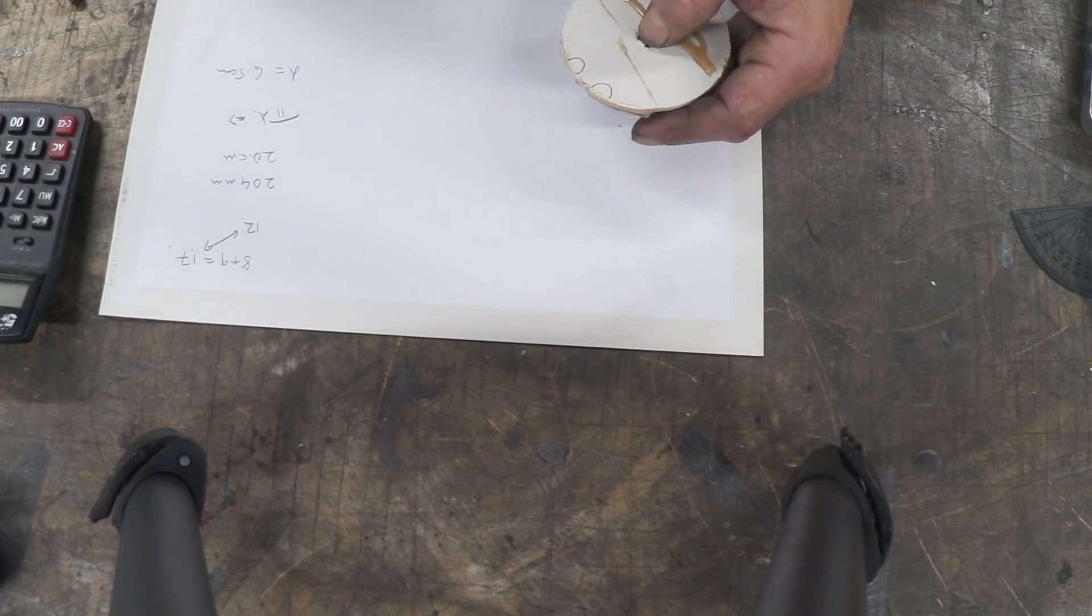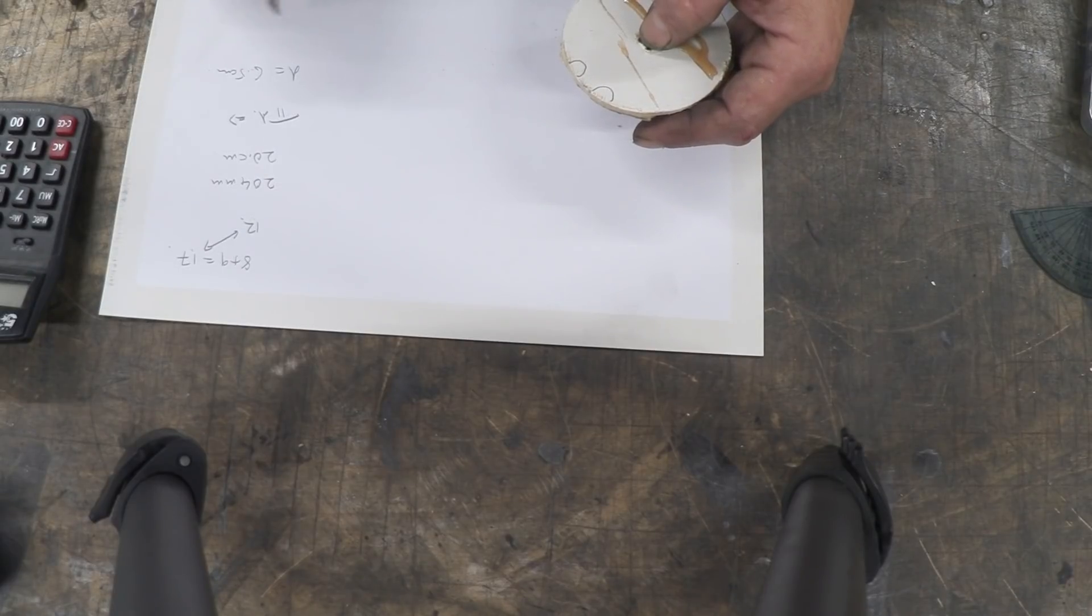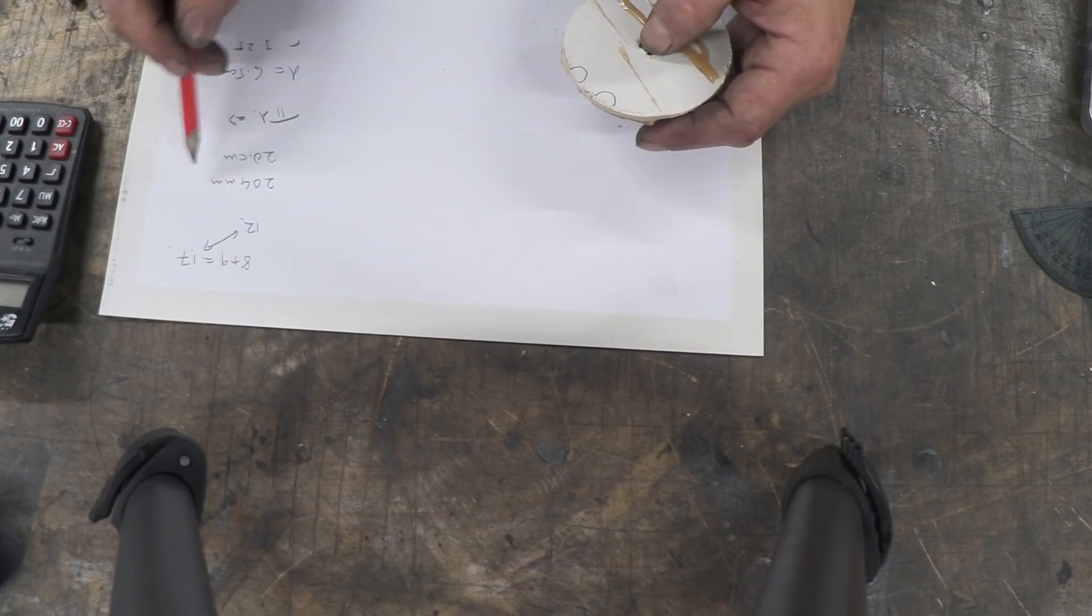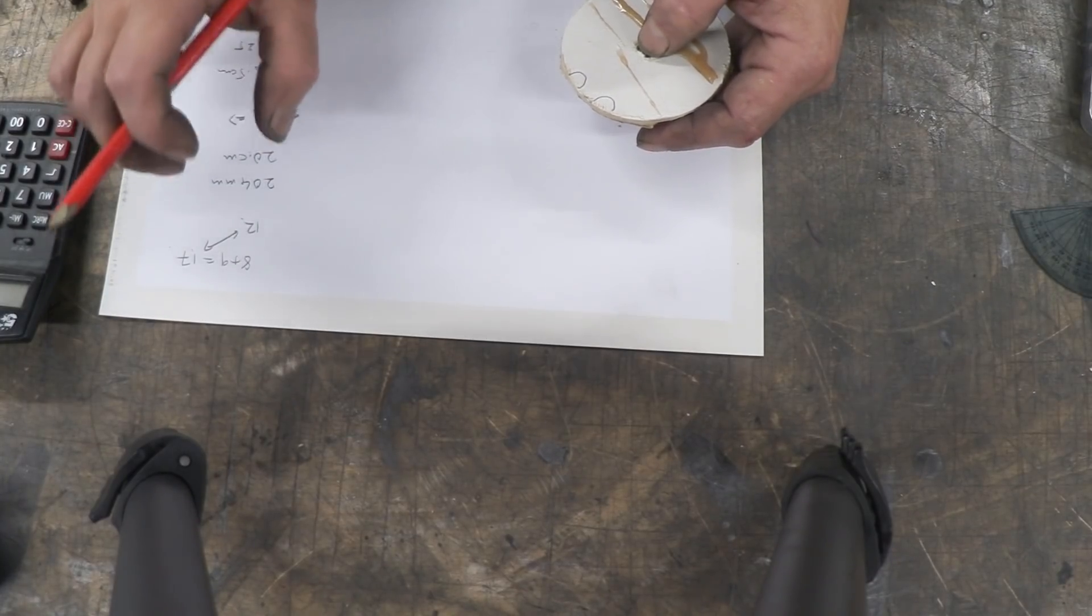So I need a circle 6.5 centimeters big. The radius of that obviously is 3.25. So if I take my compass set it at 3.25 and draw a circle, that circle will have a circumference of 20.4 centimeters on which I can get 12 of these teeth.